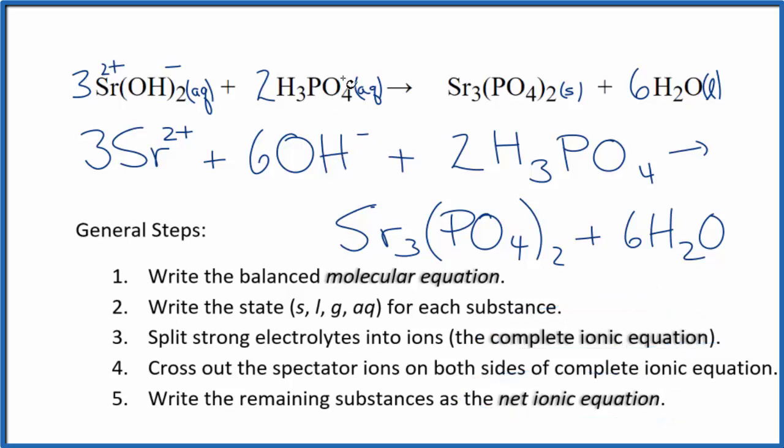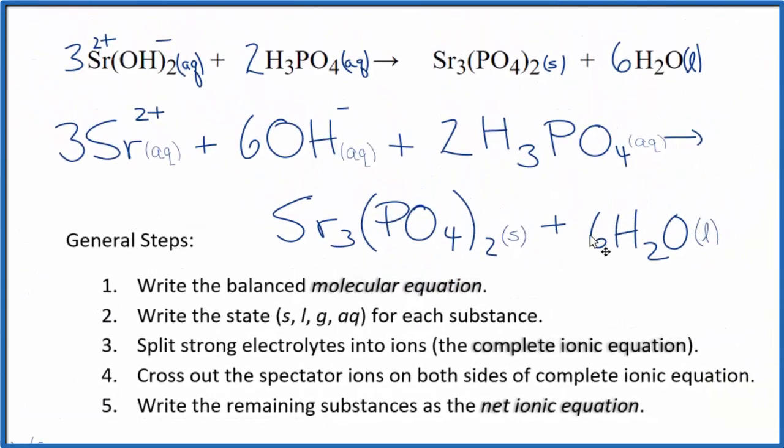The big thing to remember here is this H3PO4. Phosphoric acid is one of the common weak acids, one you need to recognize. And even though it dissolves, we don't split it apart. So this is the balanced net ionic equation for strontium hydroxide plus phosphoric acid.